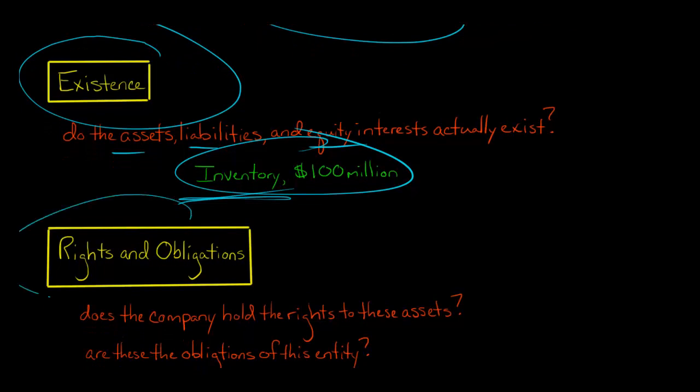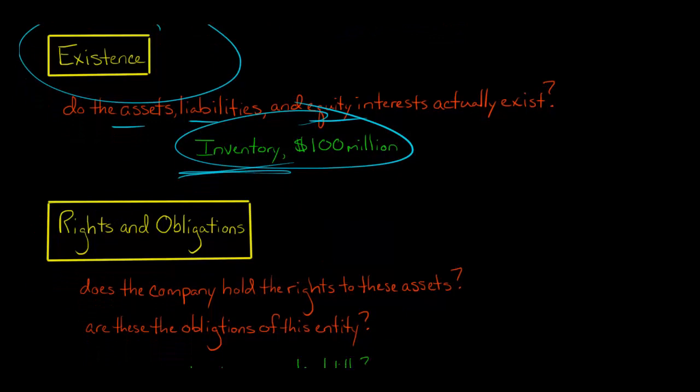With respect to the assertion about rights and obligations, management is not only asserting that this inventory exists, they're also saying that they have the rights, the legal title to that inventory. So you want to know, does the company hold the rights to the assets that it claims to have on the balance sheet?